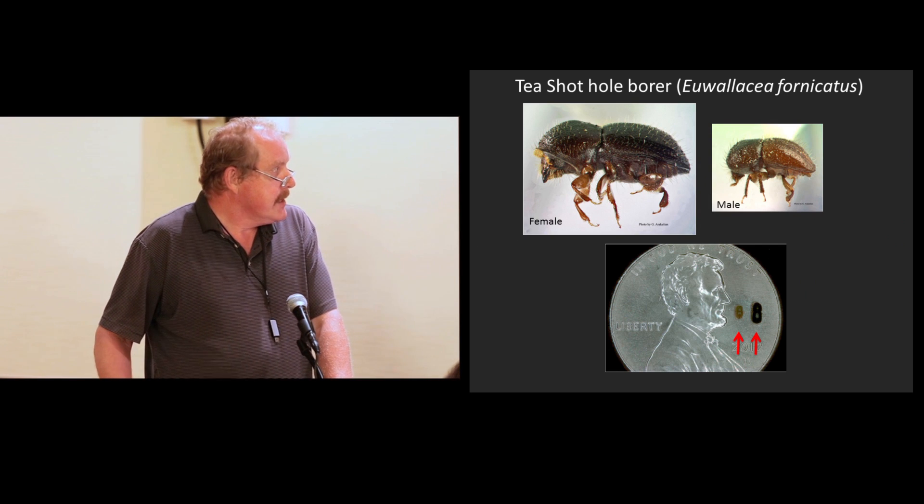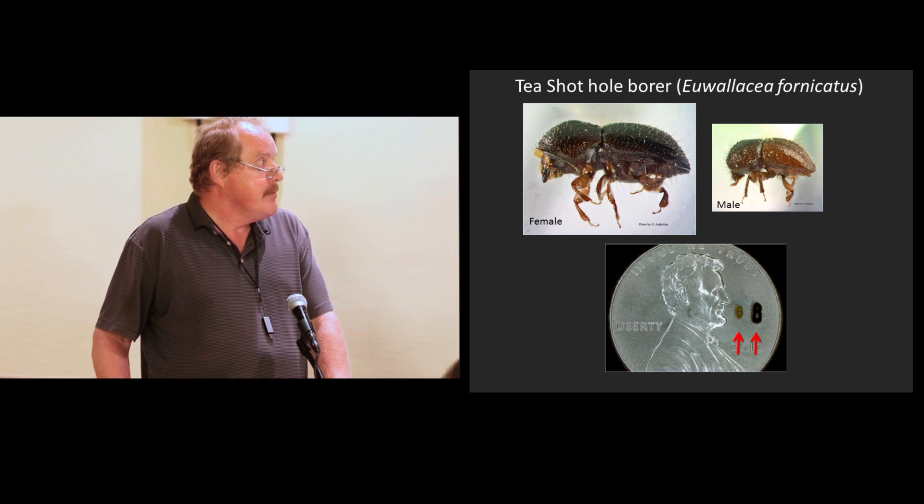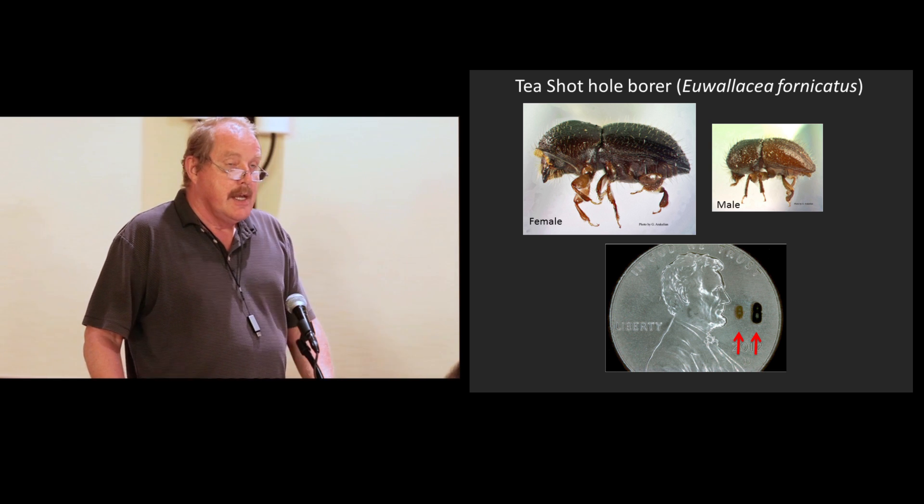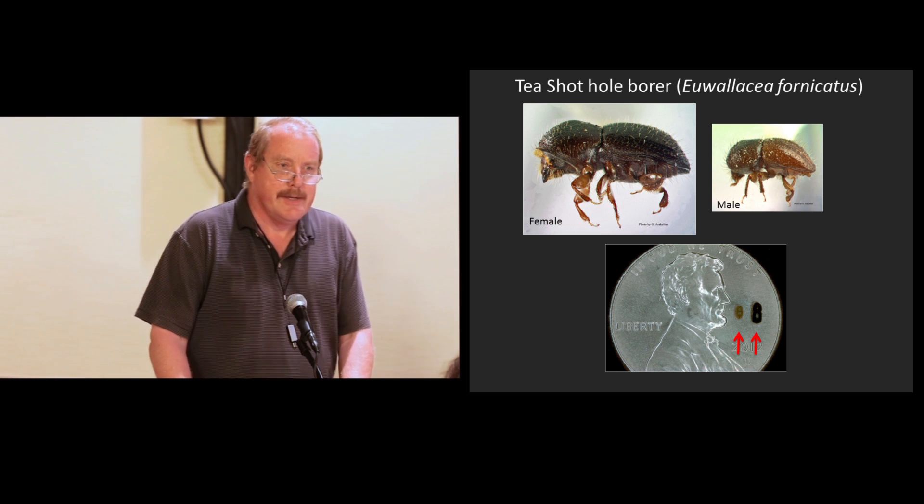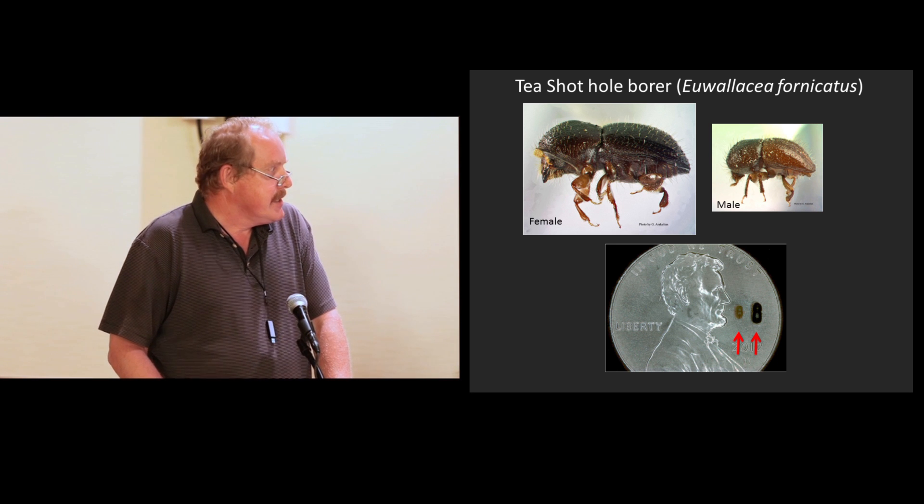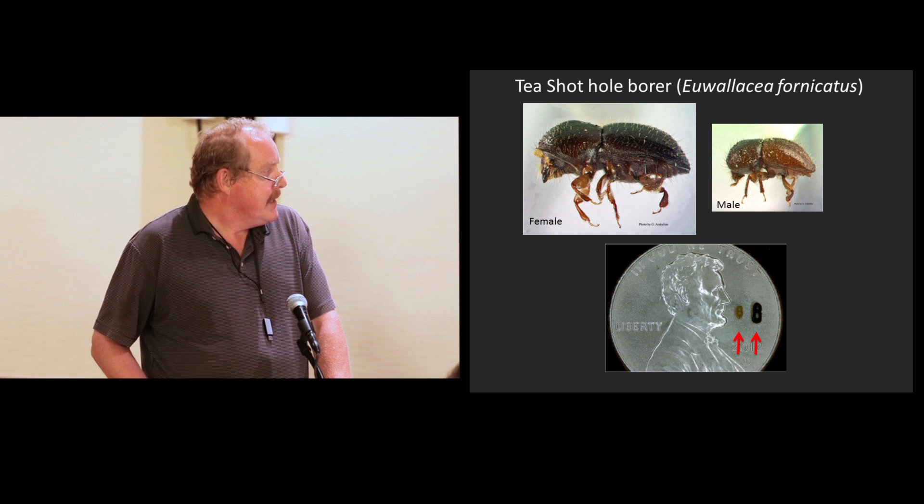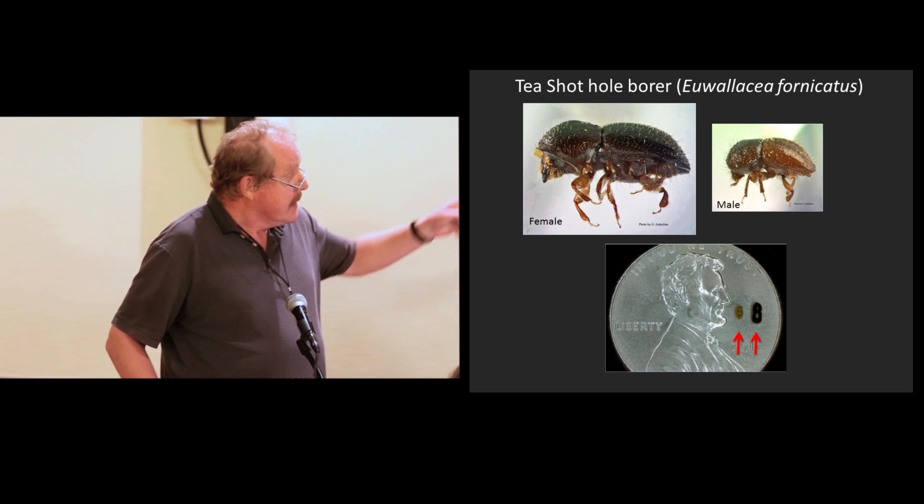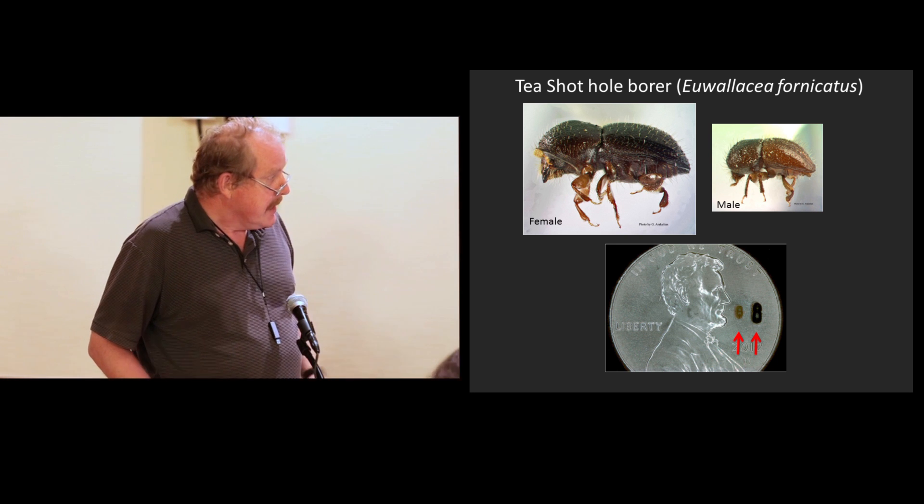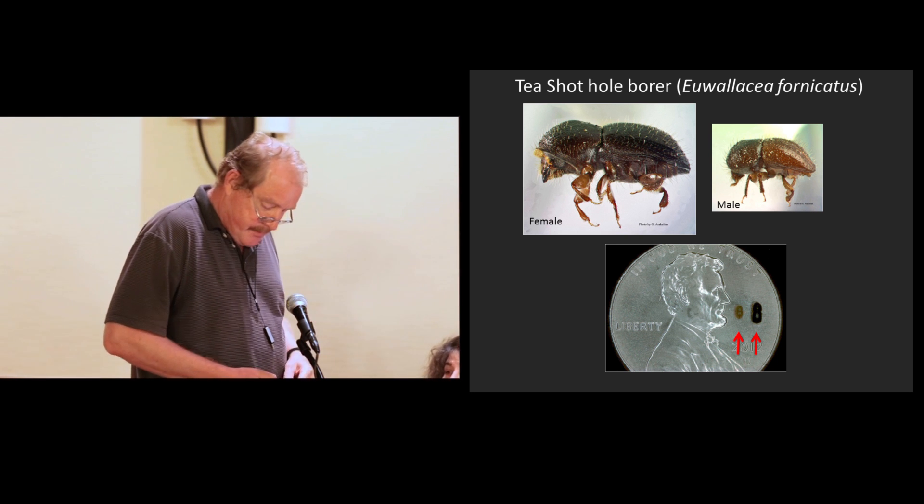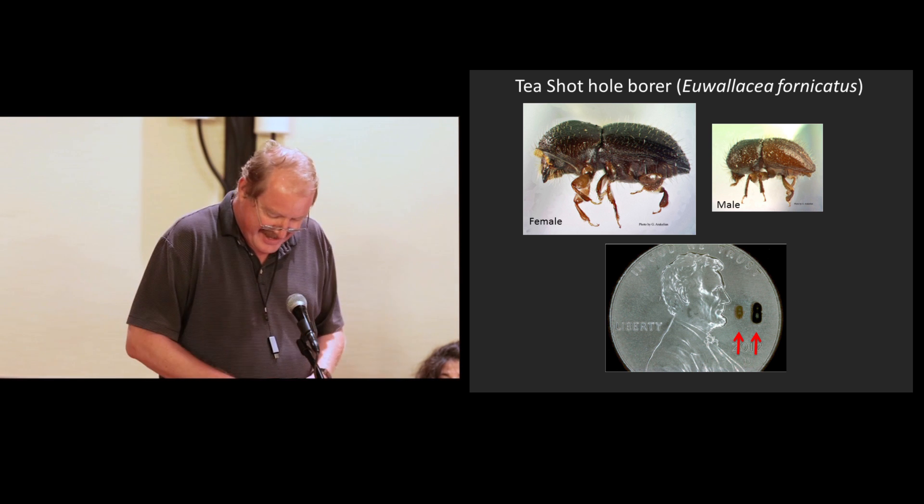First of all, this beetle, it's called the T-Shot hole borer as its common name and its scientific name is Euwallacea fornicatus. Everybody probably is interested in how it got the name fornicatus, well, we don't know. The guy that described it was a German fellow in 1868, and he didn't leave any reasons for doing that. The female is winged, the male is wingless, and you can see how small they are.